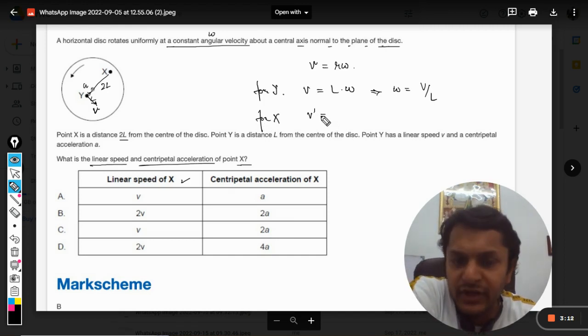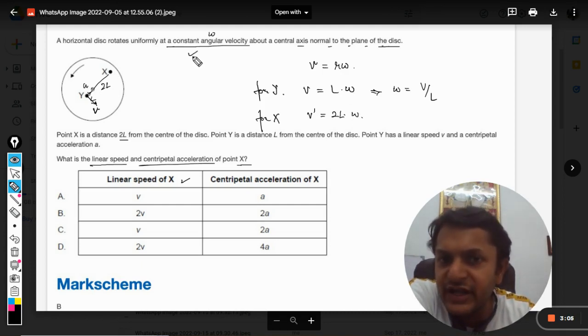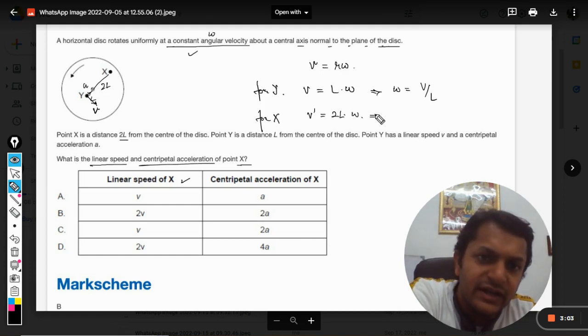The radius is 2l, omega is constant because it is moving at a constant angular velocity, so omega here is equal to v dash divided by 2l. So on comparing equations 1 and 2, because omega is same in both cases, I can say that v by l equals v dash by 2l.